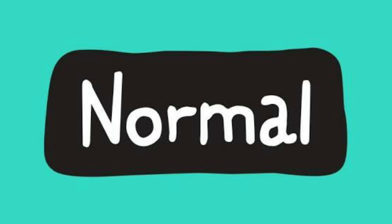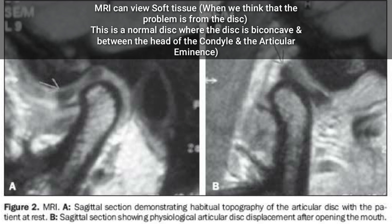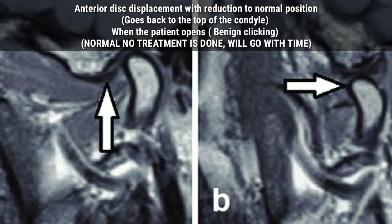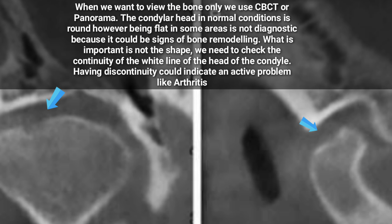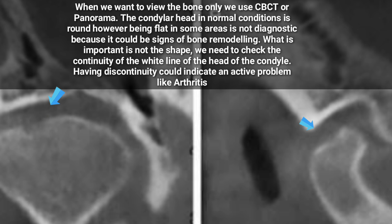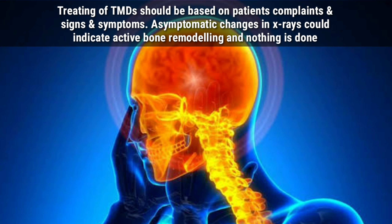Some dentists or oral surgeons ask patients to do x-rays or CBCT images to view the condyle. It should be emphasized that any changes in the anatomy of the condyle are not diagnostic. Some people think a flat condylar head in the x-ray indicates a problem, but this is a false assumption — many people with TMD have normal x-rays, and people without TMD can have a flat condyle. We do not care about the shape of the condyle; as long as the white outline of the condyle is found in the x-ray, it is considered healthy and normal.